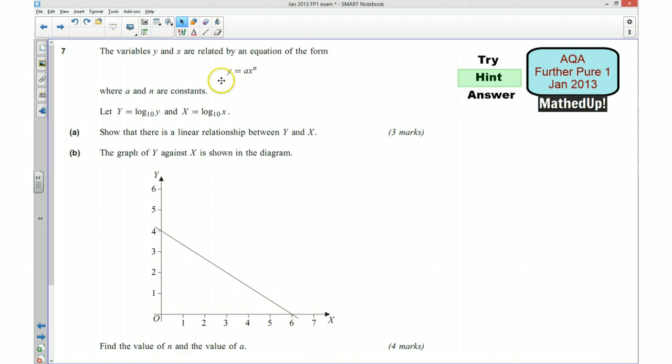What you want to start off by doing for this is taking the log base 10 on both sides of this equation. We then hopefully will be able to rearrange it so that we've got a term that's going to be log₁₀Y and another term that's going to be log X. We should then be able to replace those with the capital Y and capital X and show that there is a linear relationship between Y and X.